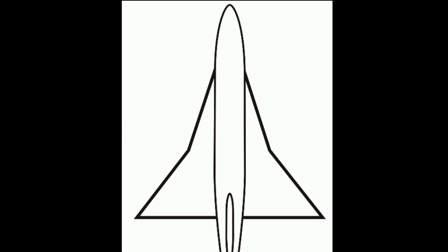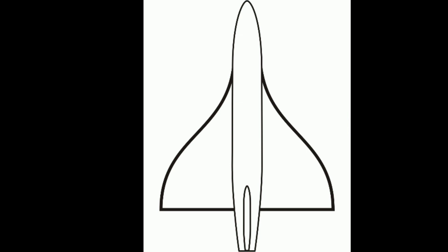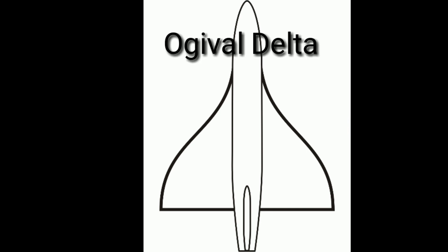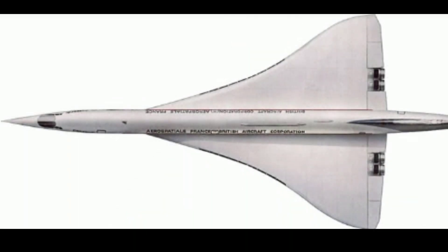The next is the compound delta and the cranked arrow. In these delta configurations the leading edge is not straight, and the inboard section has increased sweepback. An example is the F-16 XL. The next delta configuration is the Ogee Bell designed delta, used for high speed aircraft and mainly designed to minimize drag at supersonic speed. The disadvantage is that they are complex and difficult to manufacture. An example is the Concorde.